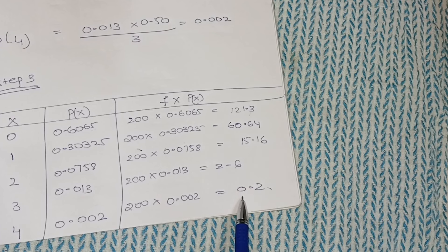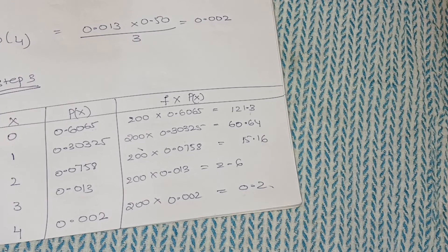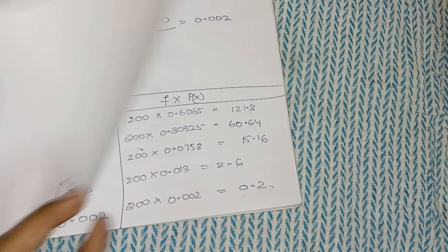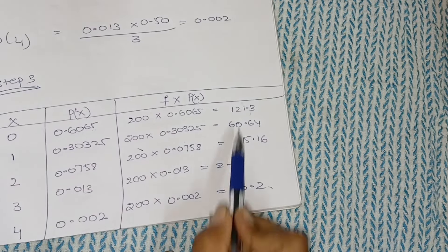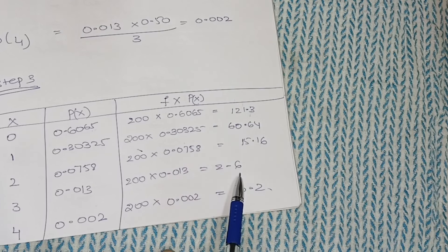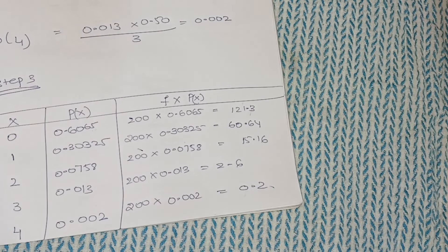If you add all the f × P(x) values, you should get 200 or close to 200. If you are getting 200, that means you have calculated correctly. That is how you do Poisson distribution.